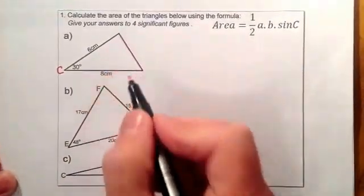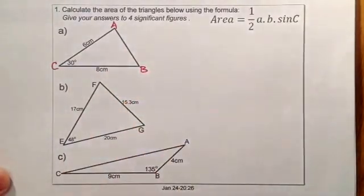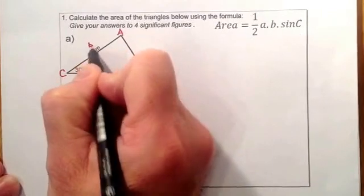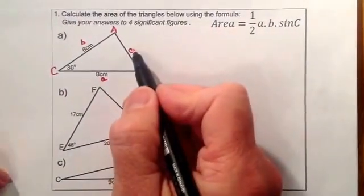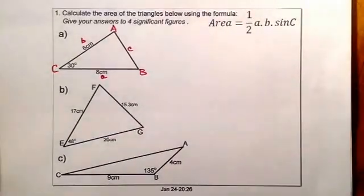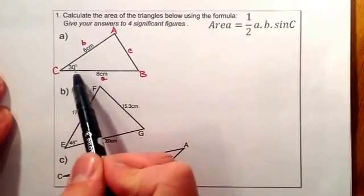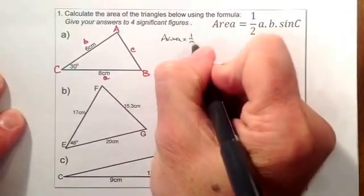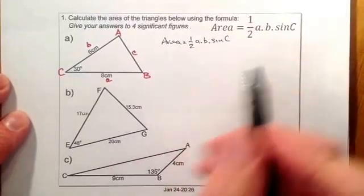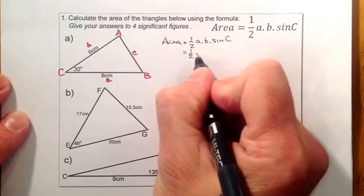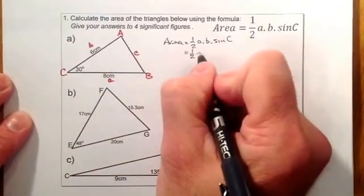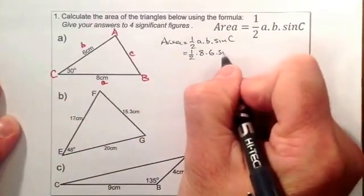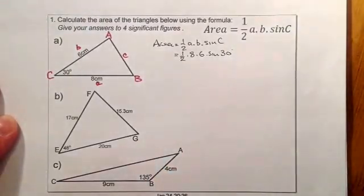It doesn't matter which one I label A or B — I'll go for the top being A. So side A is the top side, side B is the bottom side, and side C is across from angle C. I don't really need side C in the formula. I need the angle and the sides beside it coming away from that corner. So the area is equal to half AB sine C, all multiplied together. Substituting in: half times A, which is 8, times B, which is 6, times sine of 30 degrees.